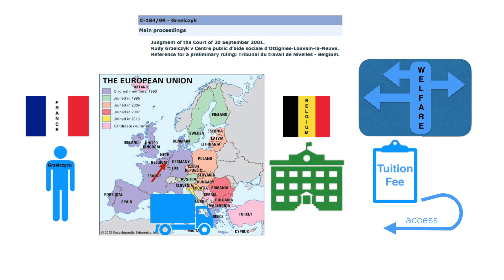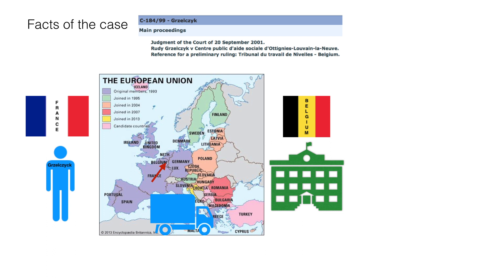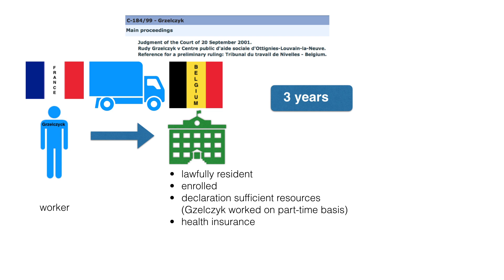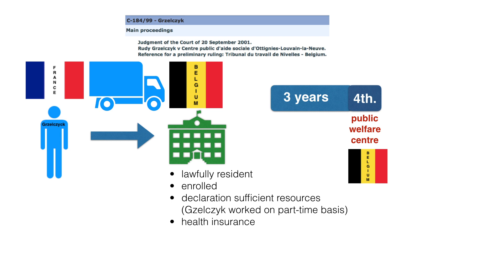The relevant facts were as follows. Rudy Greltschek is a French national who moved to Belgium to study. He studied and worked on a part-time basis for three years to help support himself in Belgium. At the beginning of his fourth and final year of study, he applied to the Public Welfare Center for payment of the minimum subsistence allowance. It was denied on the basis that he was not Belgian.